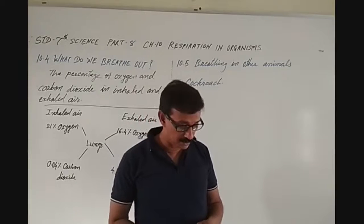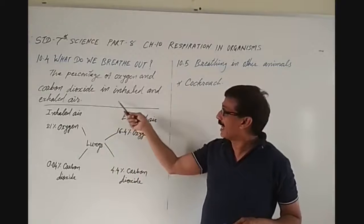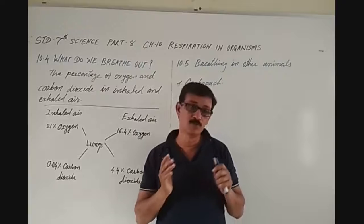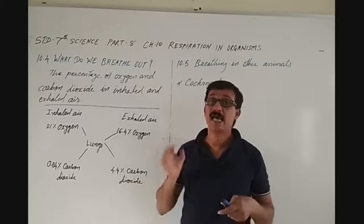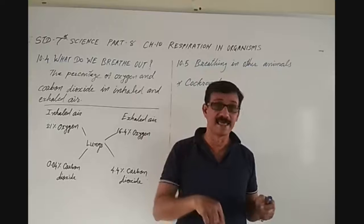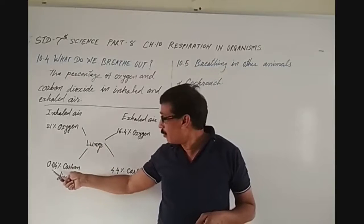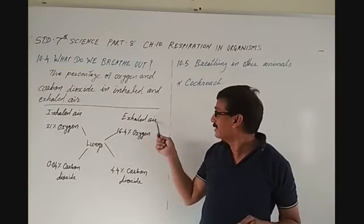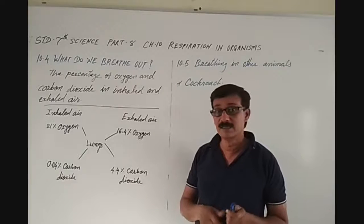There is a box showing the percentage of oxygen and carbon dioxide in inhaled and exhaled air. In inhaled air, there is 21% oxygen and 0.04% carbon dioxide. When we exhale, the exhaled air contains 16.4% oxygen and 4.4% carbon dioxide.